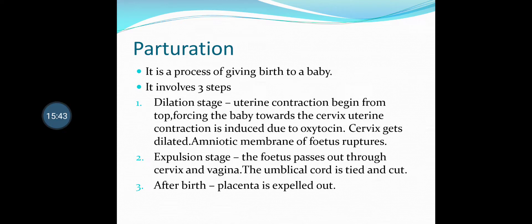Parturition is nothing but birth — the process of giving birth to a baby. It involves three stages. First is the dilation stage: uterine contraction begins from the top, forcing the baby towards the cervix. Uterine contraction is induced by oxytocin, a hormone released by the pituitary gland stored in the neurohypophysis, as we studied in control and coordination. The cervix gets dilated and the amniotic membrane of the fetus ruptures.